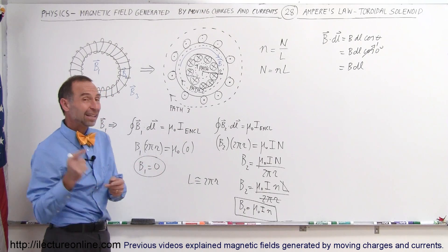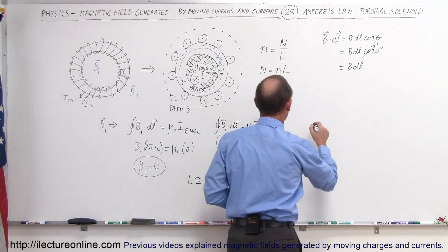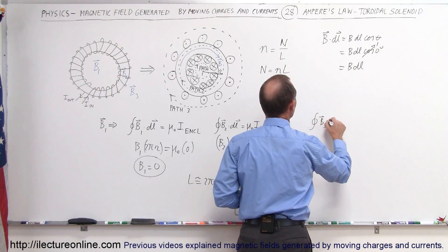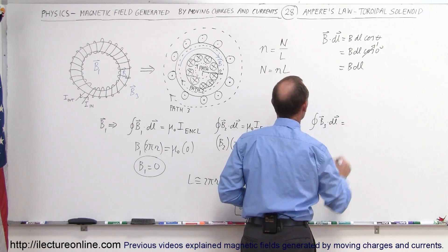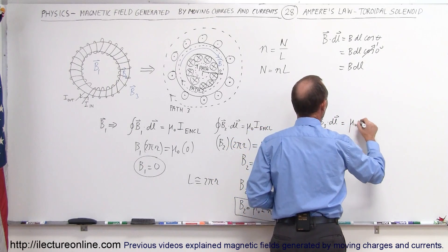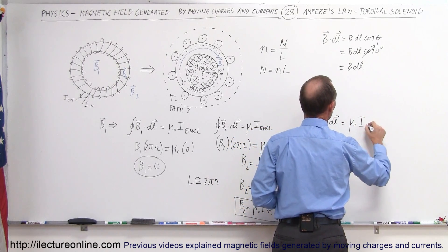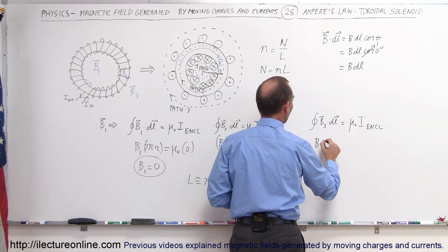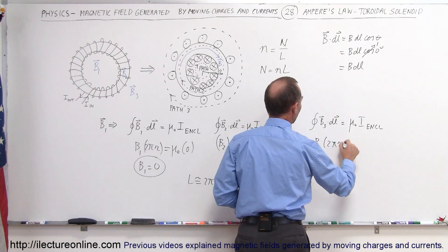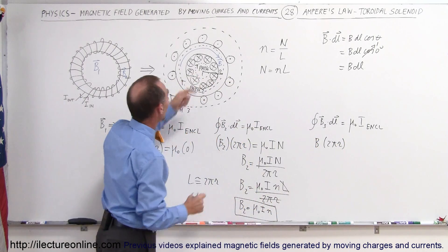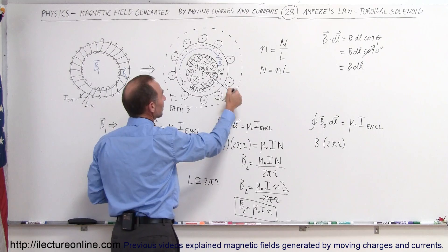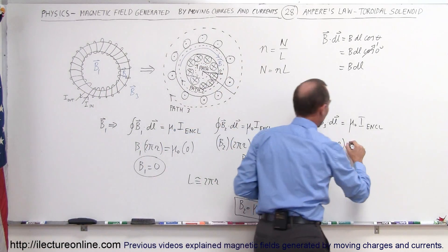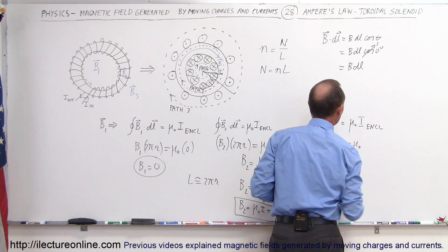Finally, let's find the magnetic field outside. The closed loop integral of B3 · dL equals μ₀ times I enclosed, giving B3 times 2πr, where r is now larger than the radius of the toroidal solenoid, multiplied by μ₀ times I enclosed.